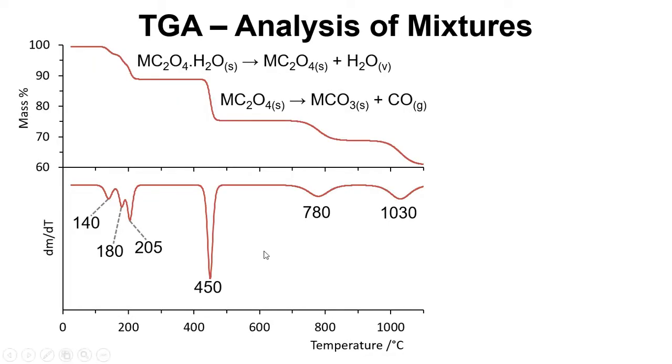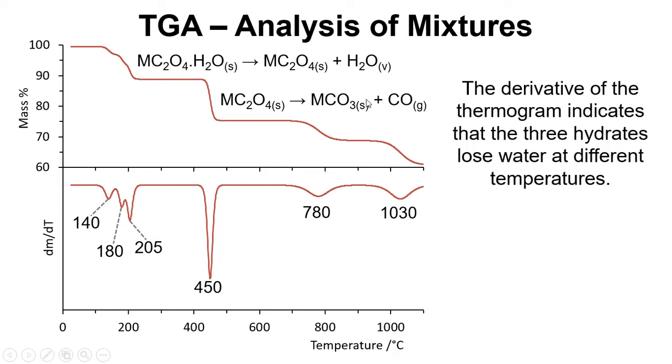If we just look at the derivative for a moment, we've got the derivative of the curve with respect to temperature and we can see actually that the water is lost in three separate stages at three different temperatures. Although that looks like one step, when we look at the derivative we can see that there's three distinct events happening.